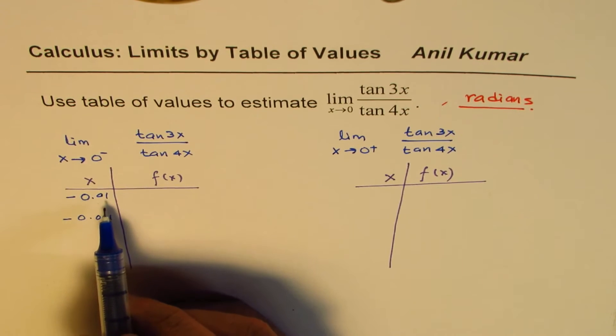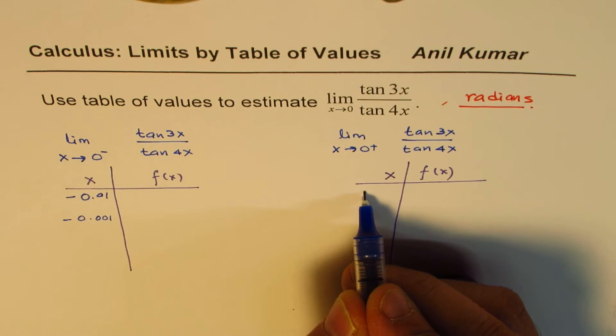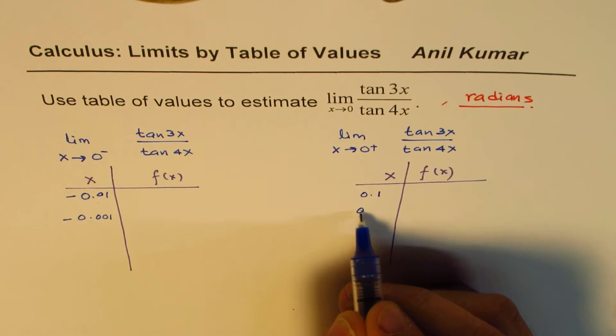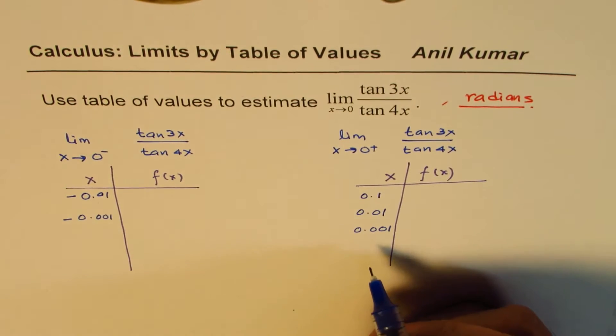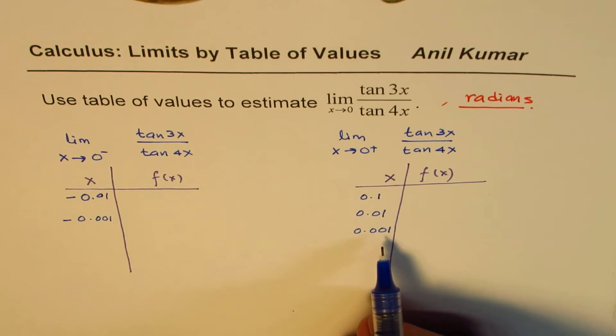Now when you are saying that you have to approach x from the right side, then you could take values as 0.1, for example. You can say 0.01. See, that is closer to 0, 0.001. Like this, you can move. So I'd like you to make this table of values and find the result.